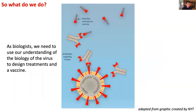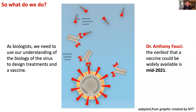So what should we do? As biologists, we need to use our understanding of the biology of this virus to design treatments and vaccines. Scientists are using the spike protein on the surface of the virus to create a vaccine, which will lead to antibodies in our blood that bind to the virus when we encounter it and prevent it from infecting cells in our respiratory system. Unfortunately, the earliest a vaccine could widely become available is mid-2021, so until then we need to take measures to prevent the spread.